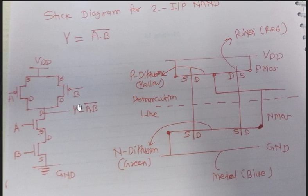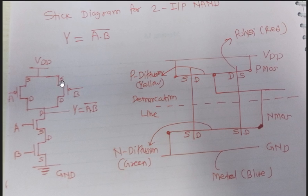Since there is a whole bar, there is no need to draw any inverter at the output. A and B are connected in parallel in the pull-up network, and A and B are connected in series in the pull-down network. We have to show the source and drain terminals. For the pull-up network, current flows from source to drain, and for the pull-down network, current flows from drain to source.